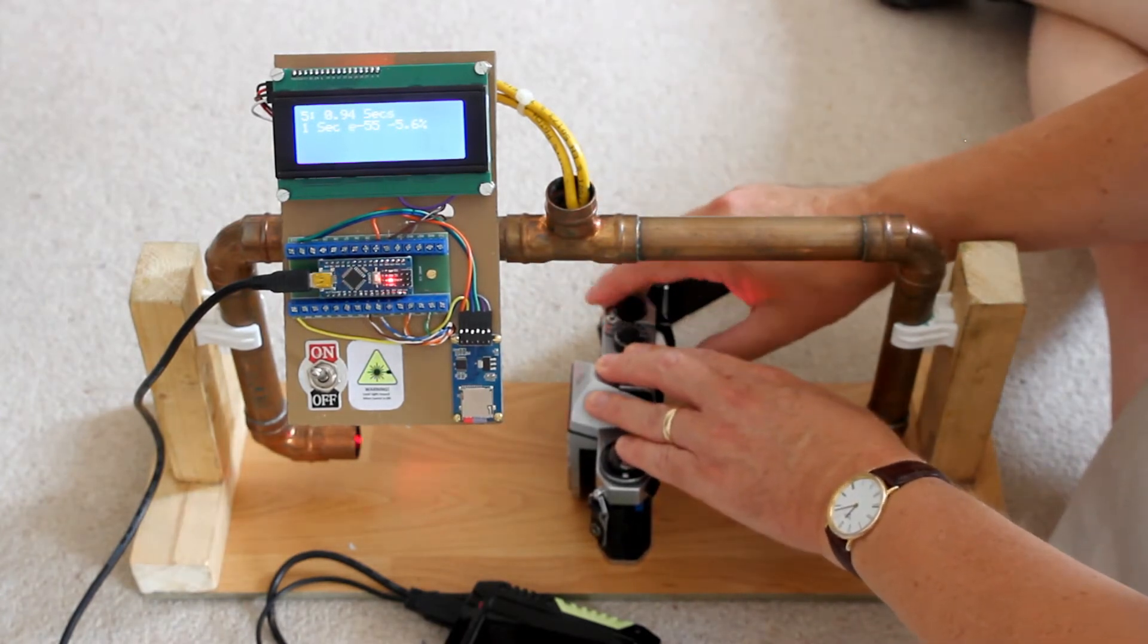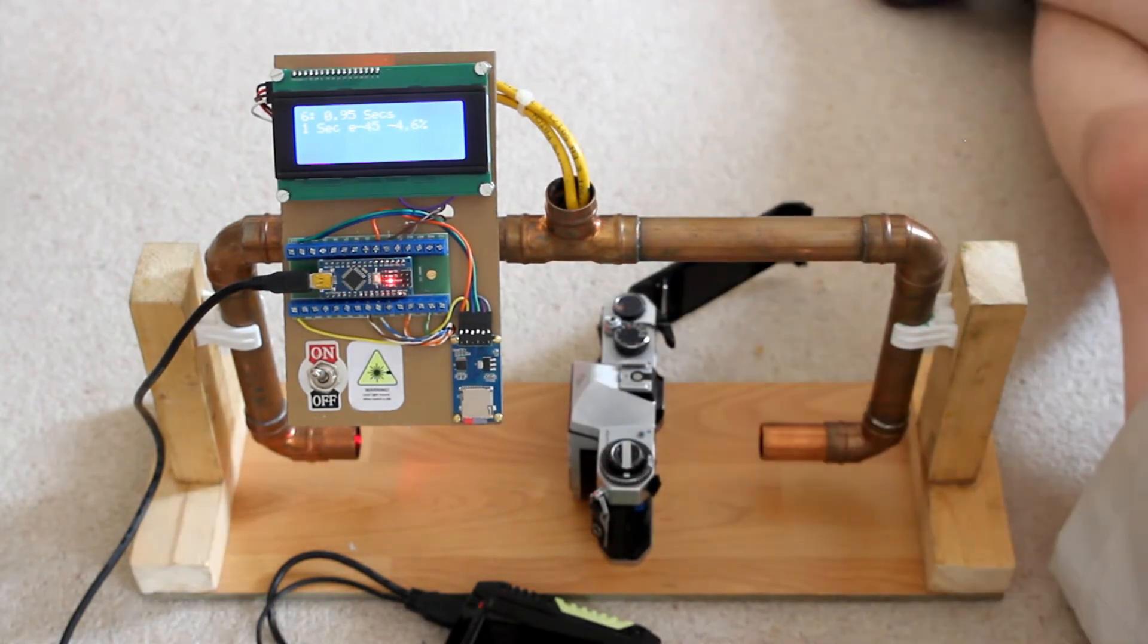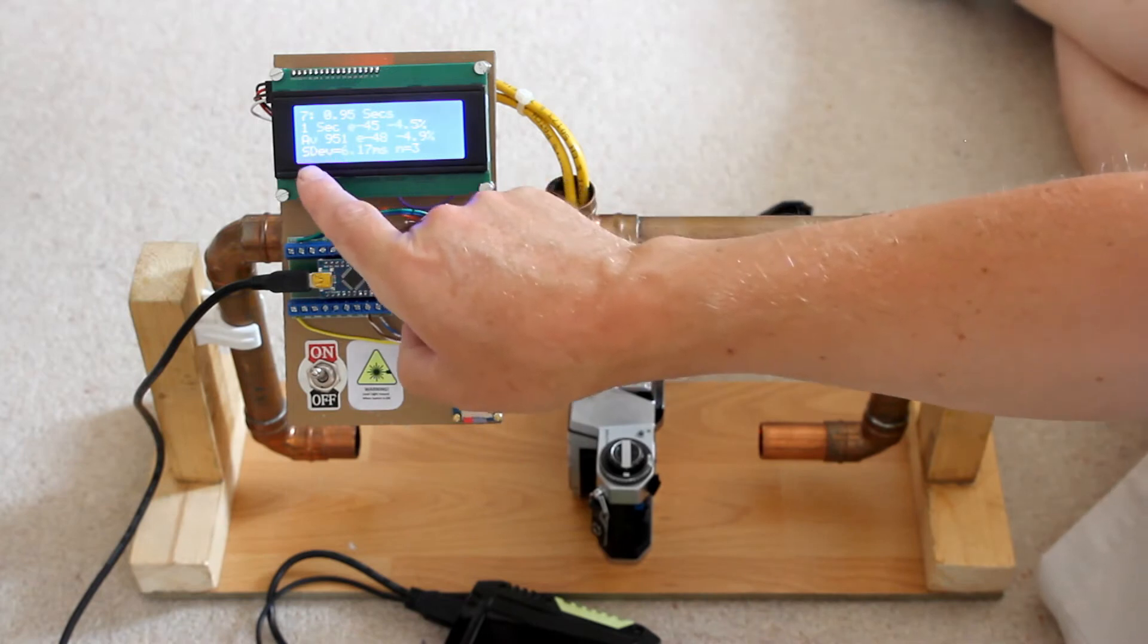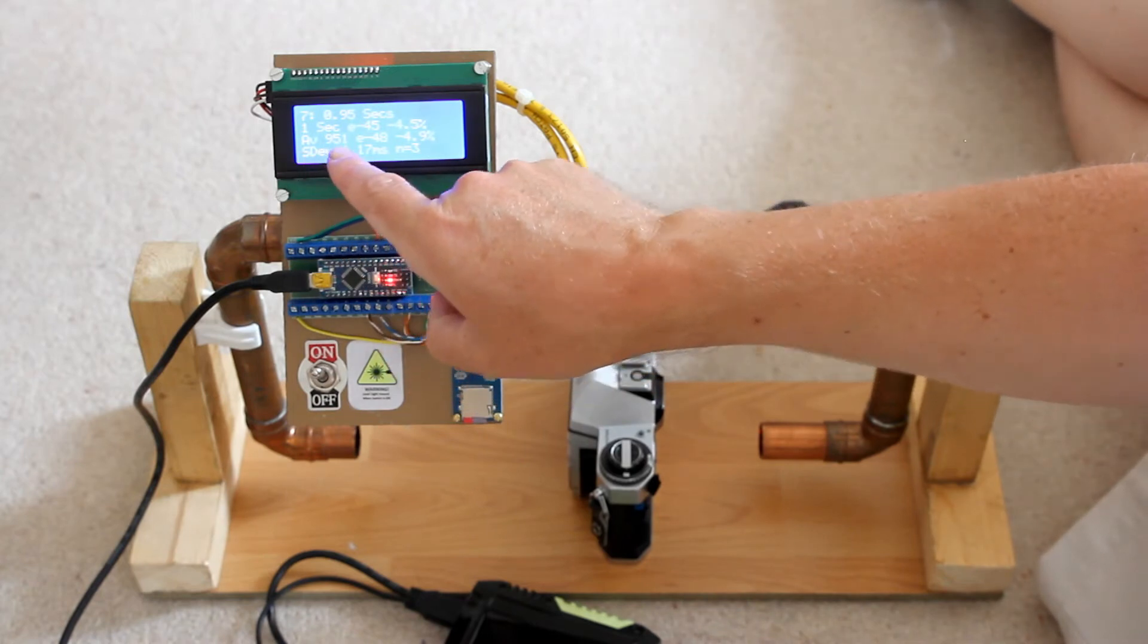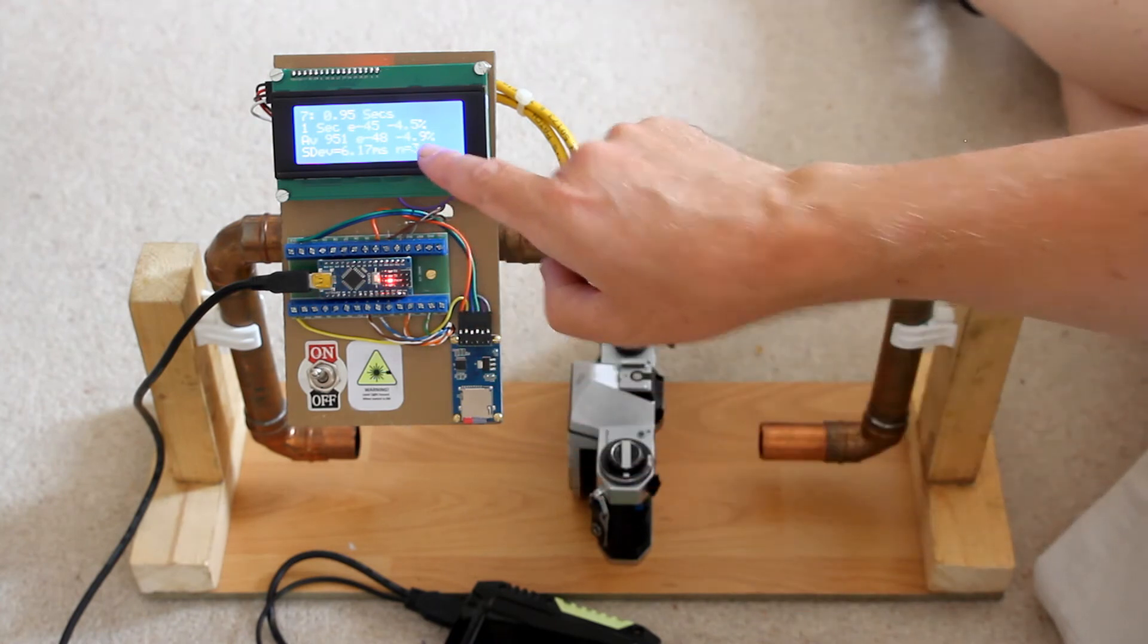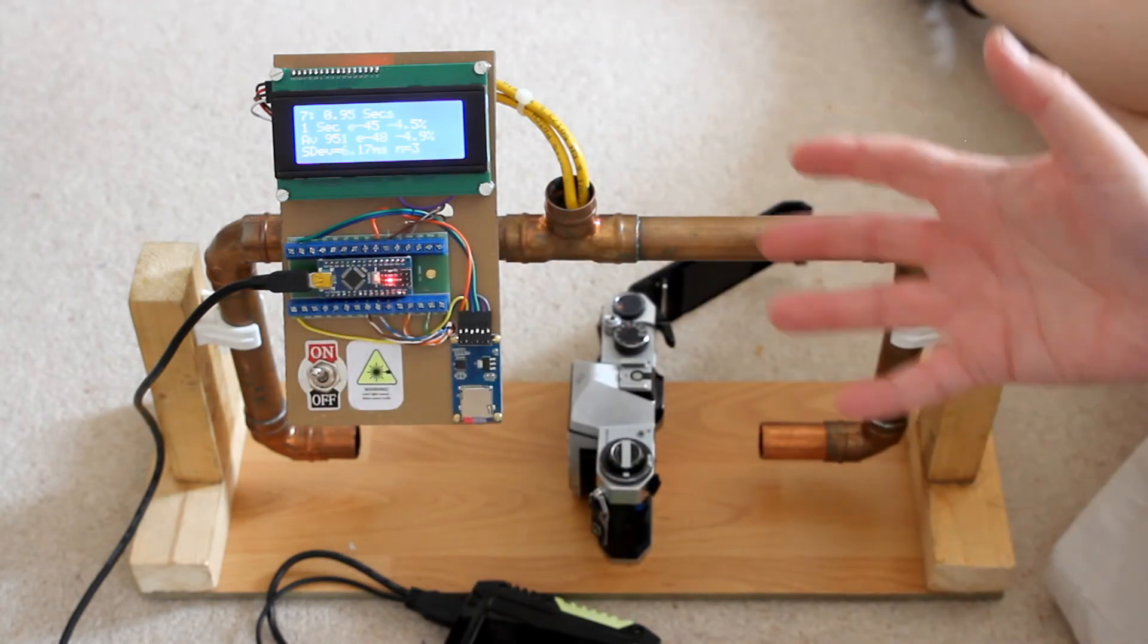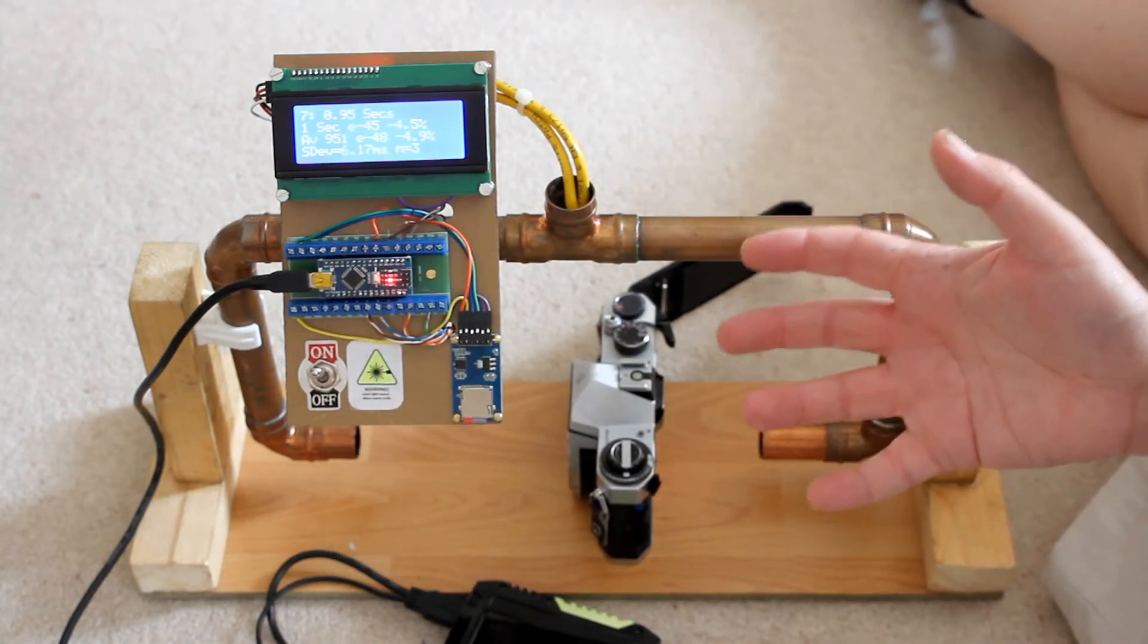I can run a second one and a third one. And as soon as it sees that third one we start getting the statistics. So I've got an average of 951 milliseconds. On average I'm out by 48 milliseconds. I'm 4.9 percent down on the actual speed. And then I've got my standard deviation of my number. And again all of this has been recorded onto the data logger.